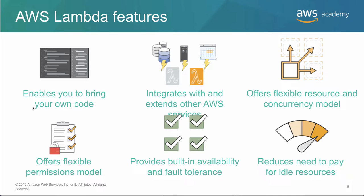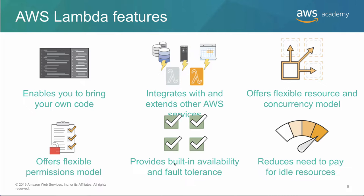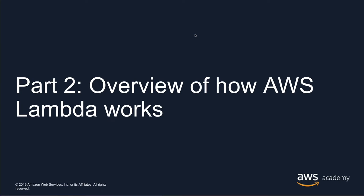Lambda enables you to bring your own code, integrates with other services, has a flexible permissions model, and provides fault tolerance — making it great for large-scale distributed computing and ETL operations. With Lambda you can build static websites, complex web applications, backends, mobile and IoT services, process files, do stream processing, build chatbots, do voice recognition, and IT automation.